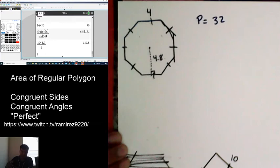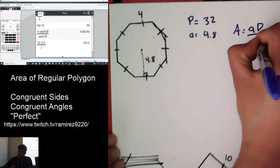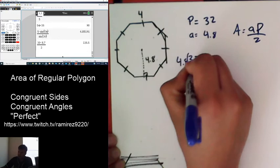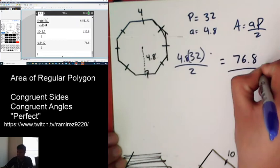Now, my apothem, they're telling me that it's 4.8. And since it's 4.8, all I have to do, well, area is apothem times perimeter divided by 2. So 32 and 4.8, I'm going to multiply them and divide by 2. 4.8 times 32 divided by 2. And so the area here is 76.8. It's that simple. That simple.